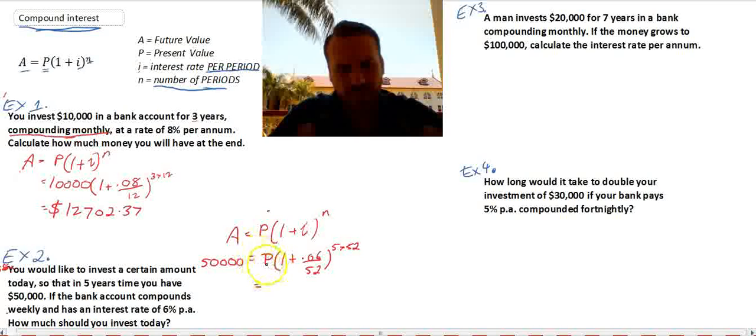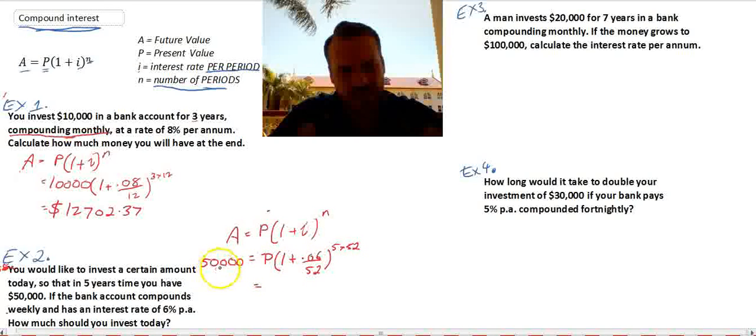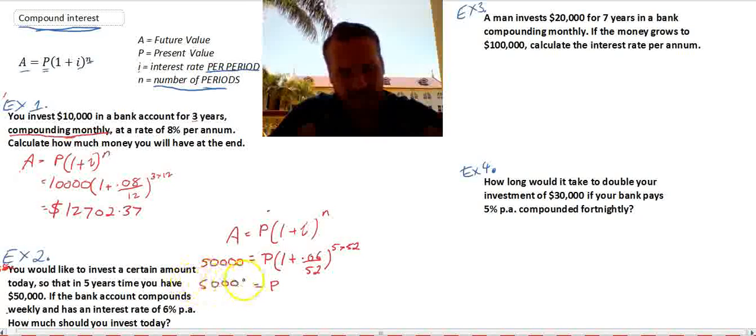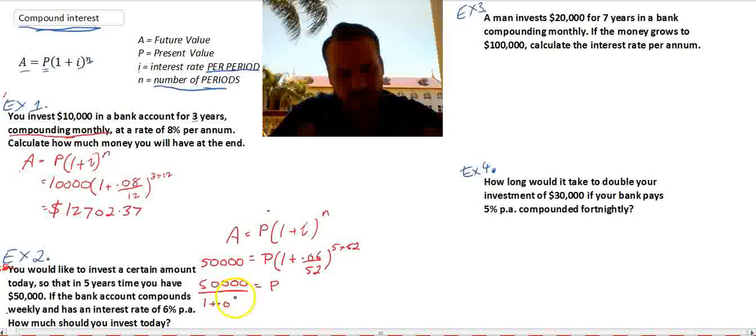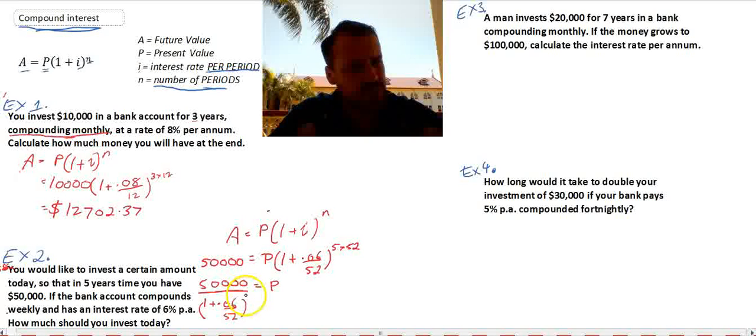Now, we want to know what P is. Now you can see that P times all of this. So if we want to find out what P is, we just need to take this number and divide it by all of this. So P is going to be equal to 50,000 divided by 1 plus 0.06 over 52 to the power of 5 times 52, which is 260.